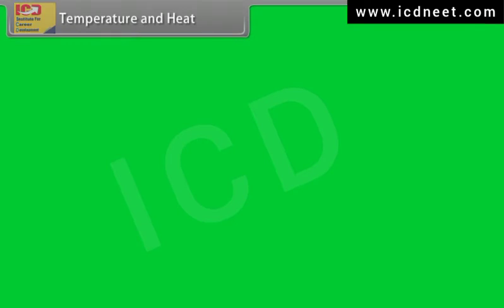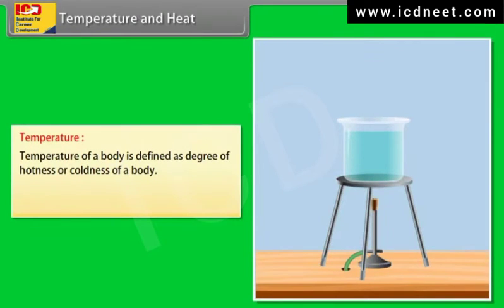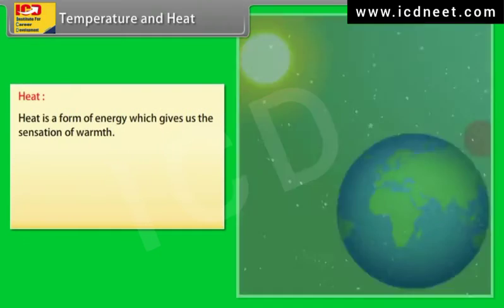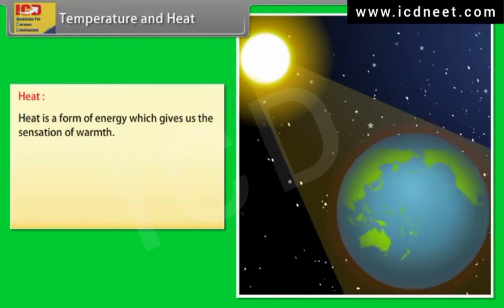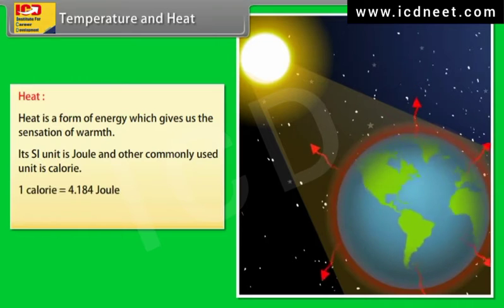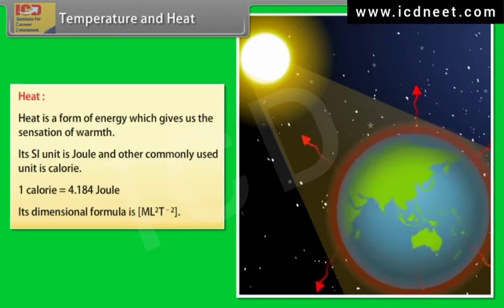Temperature and heat: Temperature of a body is defined as the degree of hotness or coldness of a body. Its SI unit is Kelvin and degree Celsius is a commonly used unit of temperature. Heat is a form of energy which gives us the sensation of warmth. Its SI unit is Joule and other commonly used unit is calorie. One calorie is equal to 4.184 Joule.